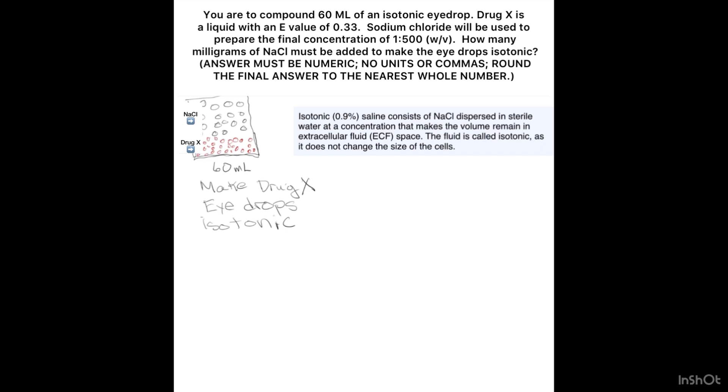We're being asked to figure out how many milligrams of the black dots, or the sodium chloride, I'm going to have to add to make this solution isotonic. And we know isotonic is 0.9% saline, normal saline.